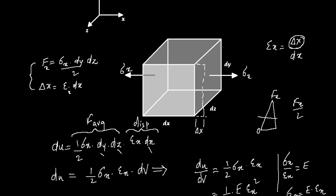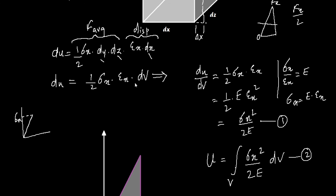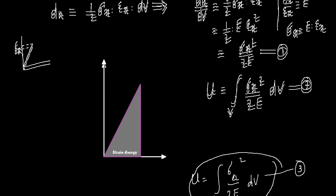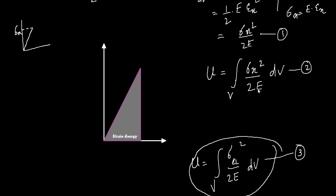Rewriting the equation: du = (1/2) × sigma x × epsilon x × dV, since dx·dy·dz is the differential volume. Therefore, internal energy per unit volume is du/dV = (1/2) × sigma x × epsilon x. Since stress divided by strain is Young's modulus, this can be rewritten in two forms: either (1/2) × E × epsilon x squared, or (1/2) × sigma x squared / E. The total internal energy is u = integral over volume of (sigma x squared / 2E) dV.